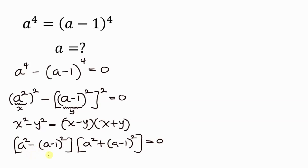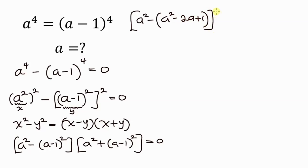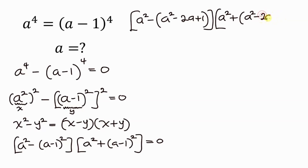Now we're going to be simplifying what is inside the brackets. So this is a squared minus — when we expand this bracket we get a squared minus 2a plus 1 — that is for the first bracket. Now for the second: a squared plus — expanding the bracket — a squared minus 2a plus 1. This is equal to 0.